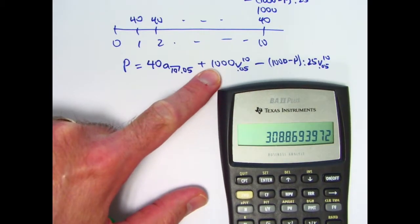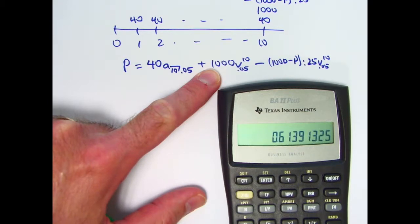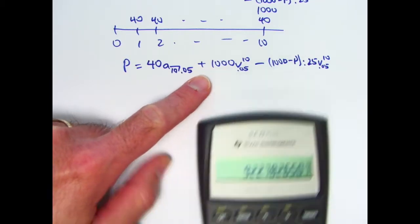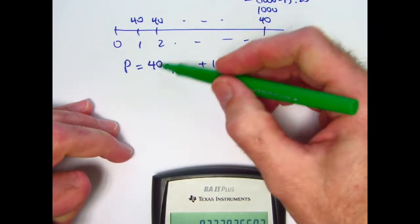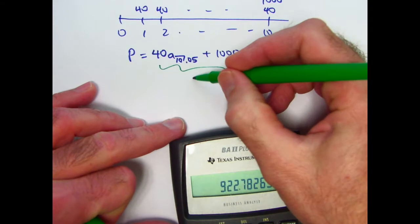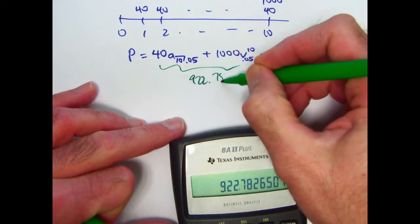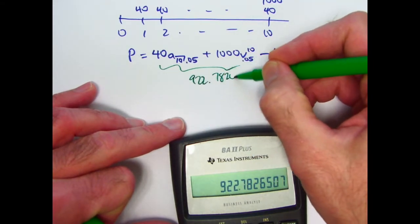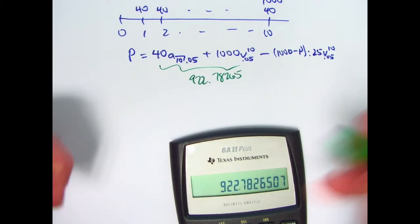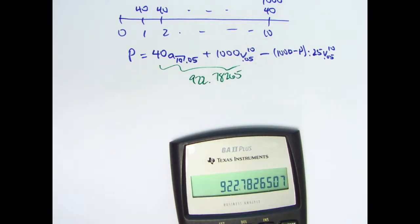Next, compute 1.05 to the negative 10th power times 1,000, and add that to what's in register 1. Recalling register 1, these two terms — the coupon annuity and the redemption present value — together equal 922.78265.